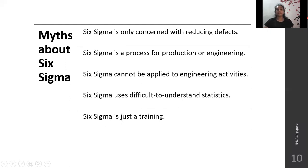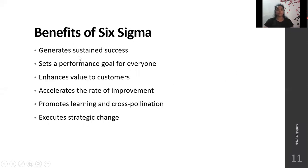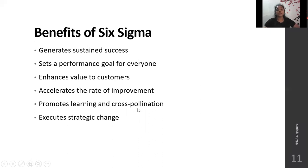Six Sigma also imparts skills through various training levels. Benefits of Six Sigma: it generates sustained success, sets performance goals for everyone, enhances value to customers, accelerates the rate of improvement, promotes learning and cross-pollination, and executes strategic change. These are all the benefits of Six Sigma, contributing to the overall development of the industry.